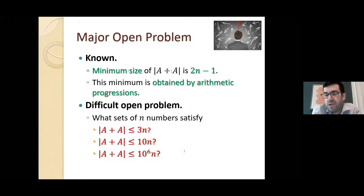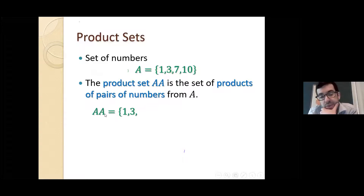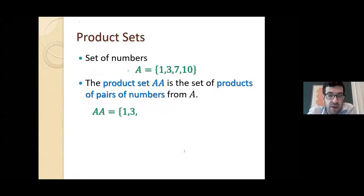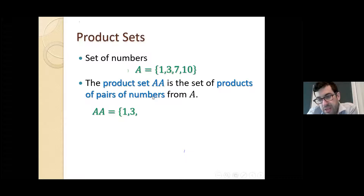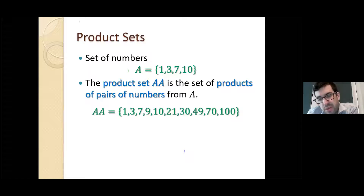Now let's talk about product sets. If we have a set A, the product set A·A is the set of all products of pairs of numbers from A. We call it A times A. So 1×1=1, 1×3=3, and so on. It doesn't matter if you can get something in two different ways — it's only there once. It's very similar to a sum set, just with multiplication.